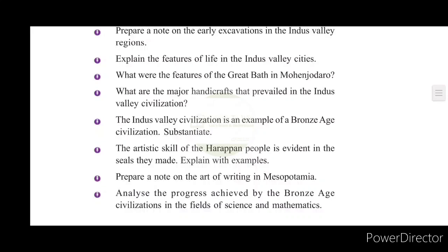The features of the Indus Valley City: first, the city was divided into two parts; second, there were planned streets; third, there was a drainage system. The buildings were all built of burnt bricks. These are the four main features.